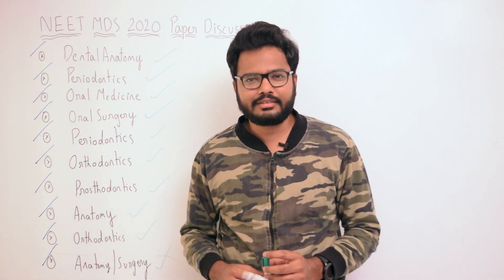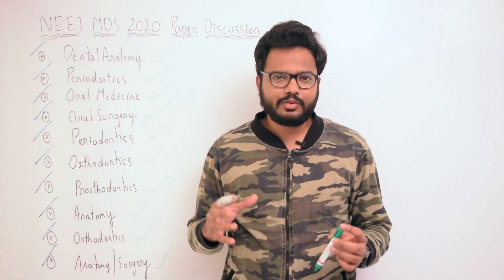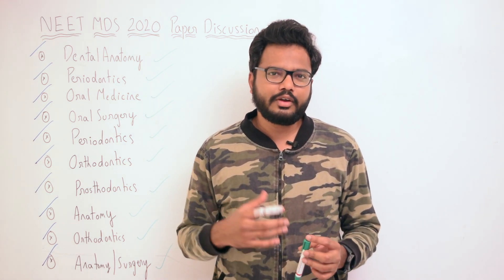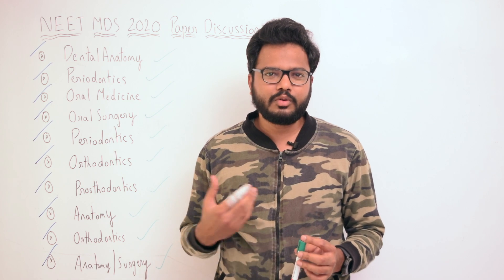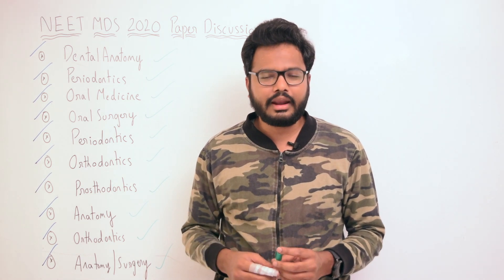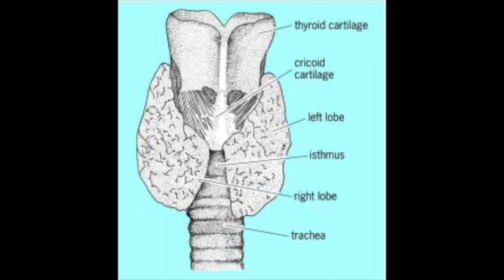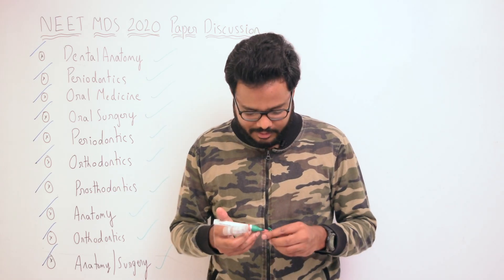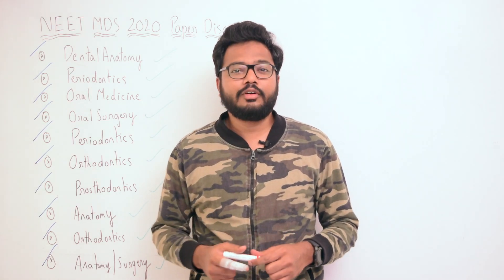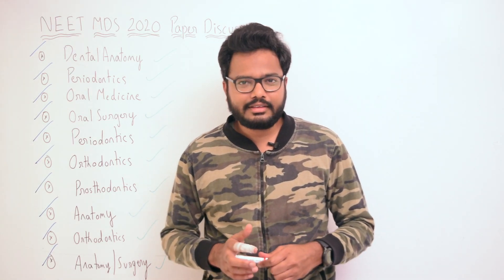The final question is from anatomy or general surgery. Once you perform a thyroidectomy — removing the complete thyroid gland — the structure that becomes visible, as you can see in the image, is the trachea.